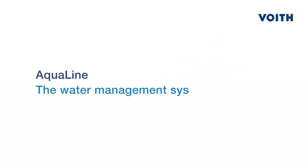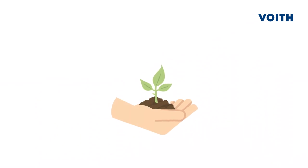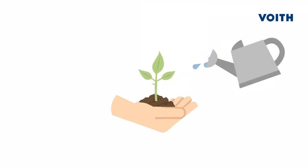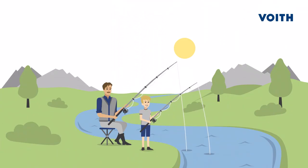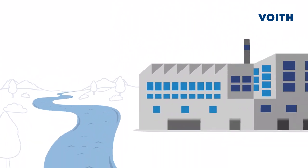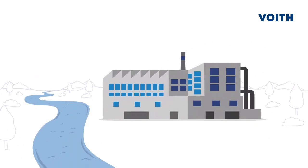Aqualine, the water management system from Voith. Sustainability is a particular concern to us. This is why we would like to do our part to preserve the environment for future generations by ecologically and economically improving our customers' production processes.